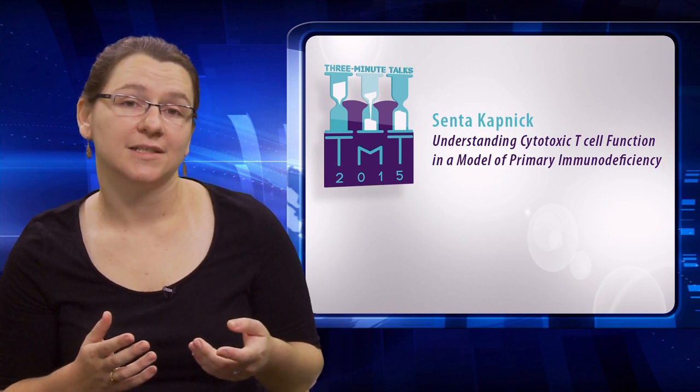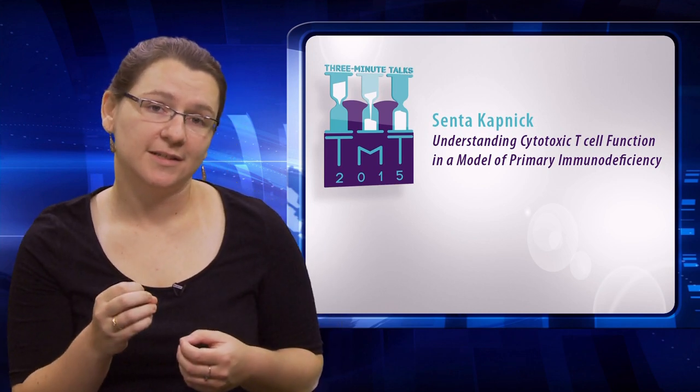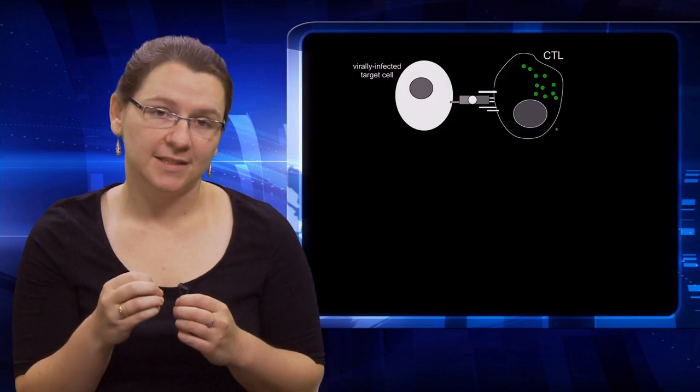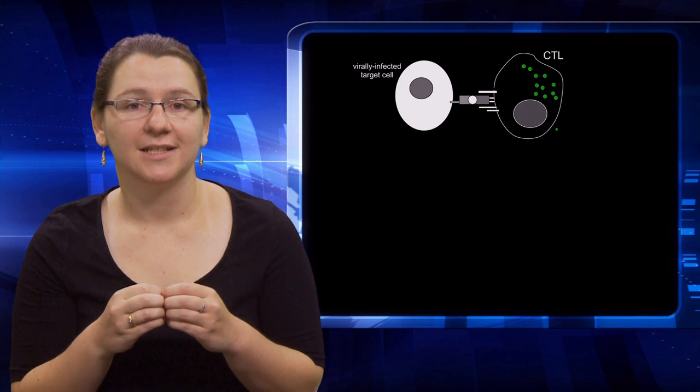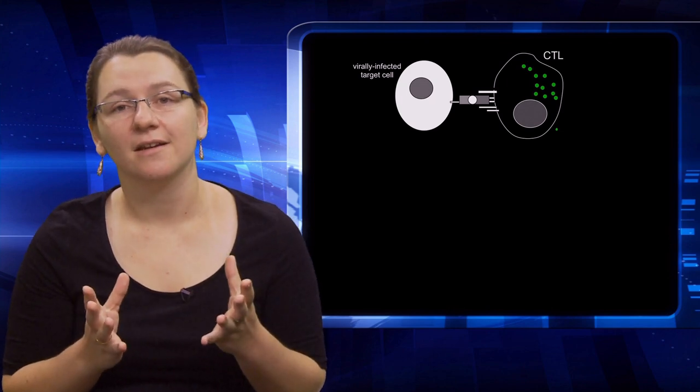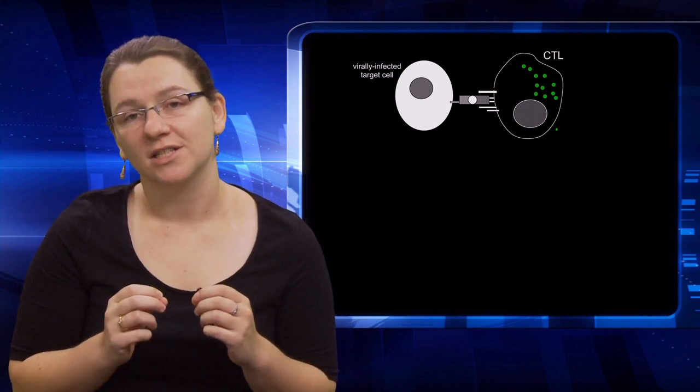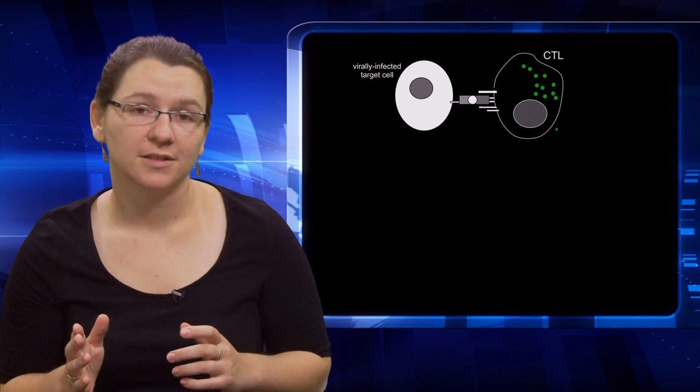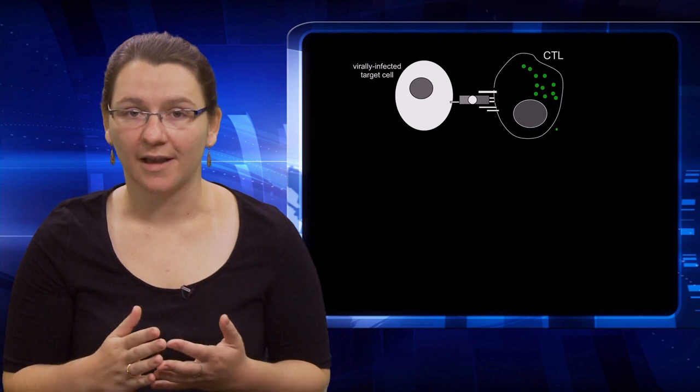CTLs find virally infected cells when their T cell receptor sees viral protein on the surface of a cell. Engagement of the T cell receptor by viral protein initiates a signaling cascade, which eventually leads to the secretion of specialized proteins housed in structures called lytic granules, which are able to induce death and kill a target cell.